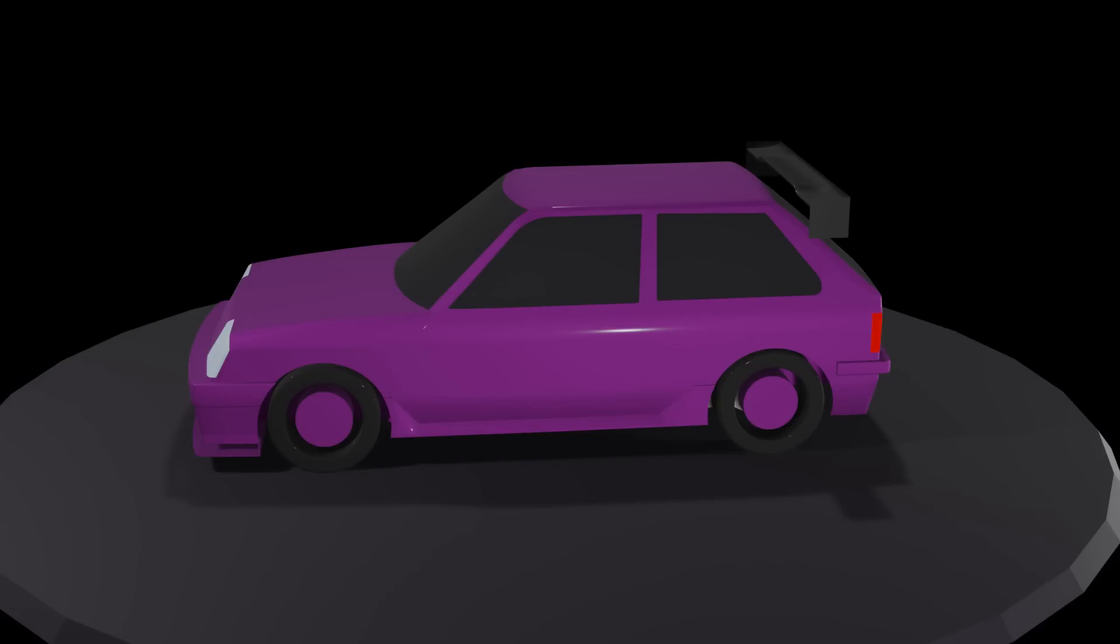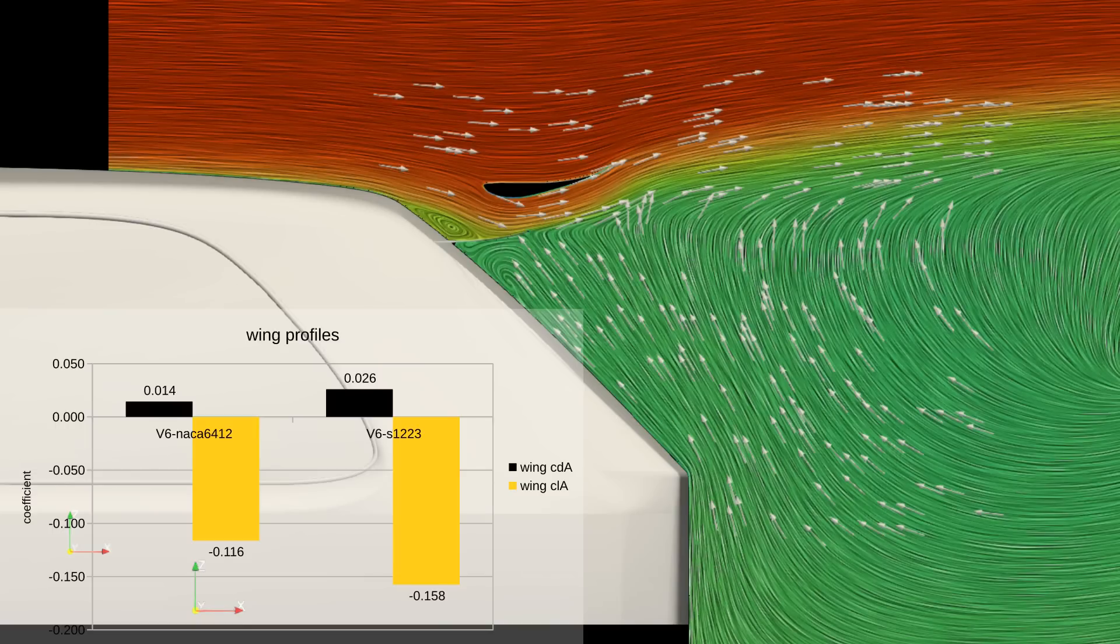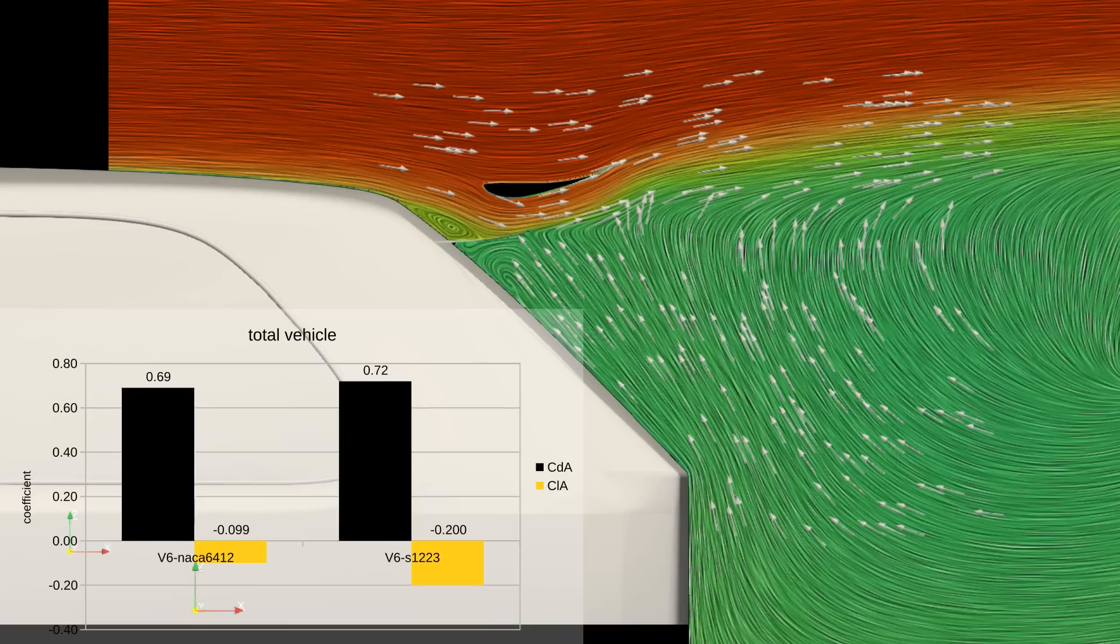This performed slightly better. The wing's CLA is now negative 0.158. But then the body doubled the downforce number to negative 0.2.